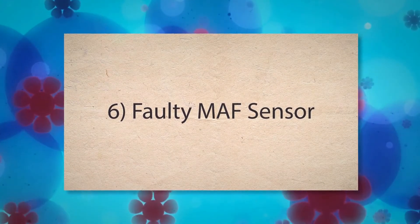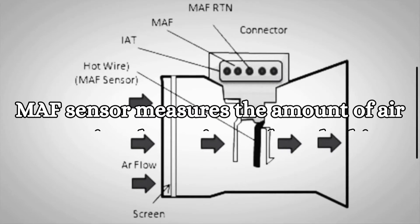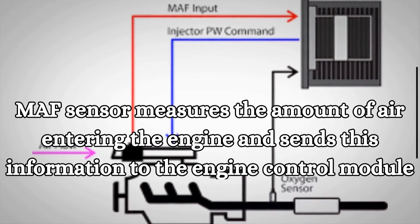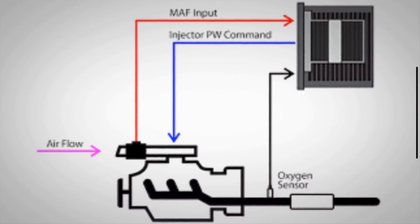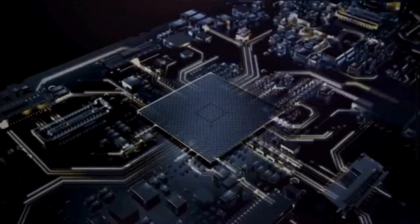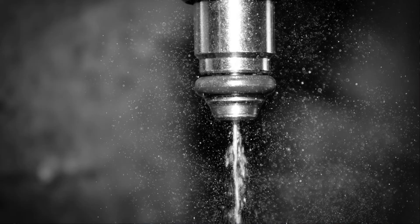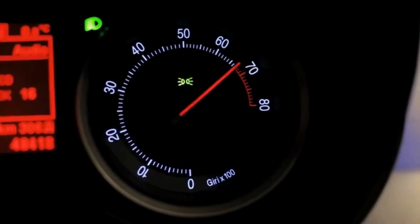Sixth, faulty MAF sensor. The MAF sensor measures the amount of air entering the engine and sends this information to the engine control module. A dirty or faulty MAF sensor can send incorrect data, which causes the engine control module to adjust the fuel delivery improperly, leading to RPM fluctuations.